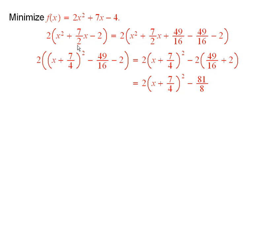Then take half of this coefficient here, this 7 halves, gives you 7 fourths. You square it, add it in, and subtract it off.